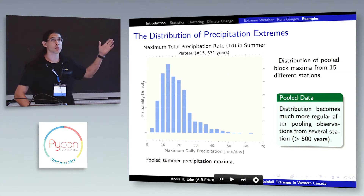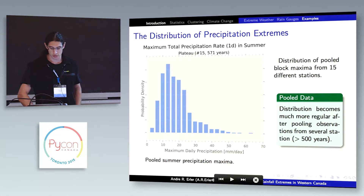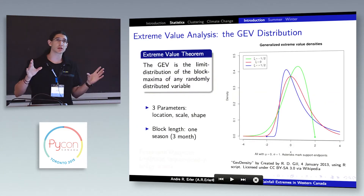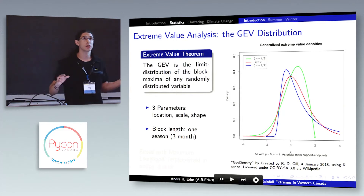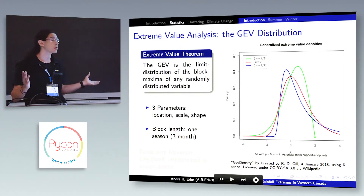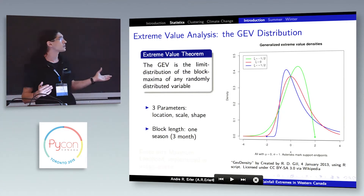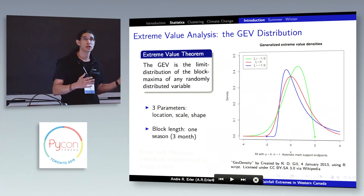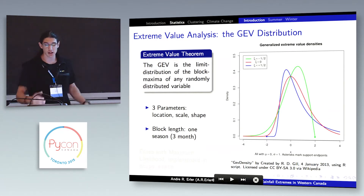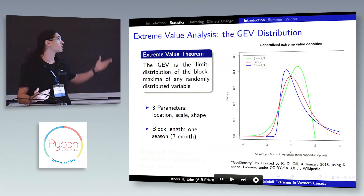This is not a normal distribution — it's a different type. From theoretical considerations, these distributions follow the generalized extreme value (GEV) family of distributions. They have three parameters: a scale and location parameter, like mean and variance, and a shape parameter that determines how it looks.